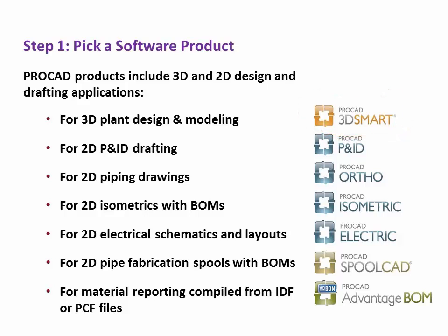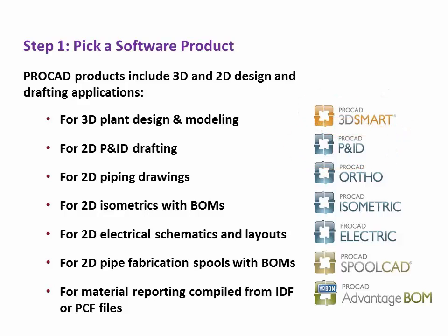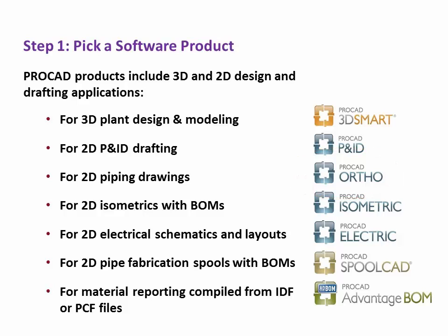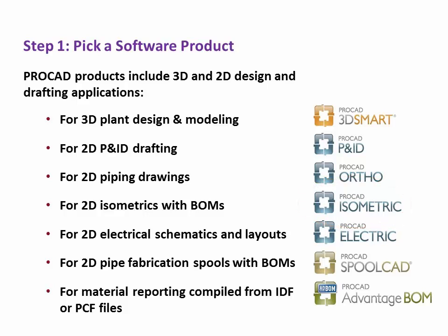For 2D P&ID drafting, select P&ID. For 2D piping drawings, select Ortho. For 2D isometrics with bill of materials, select Isometric. For 2D electrical schematics and layouts, select Electric.